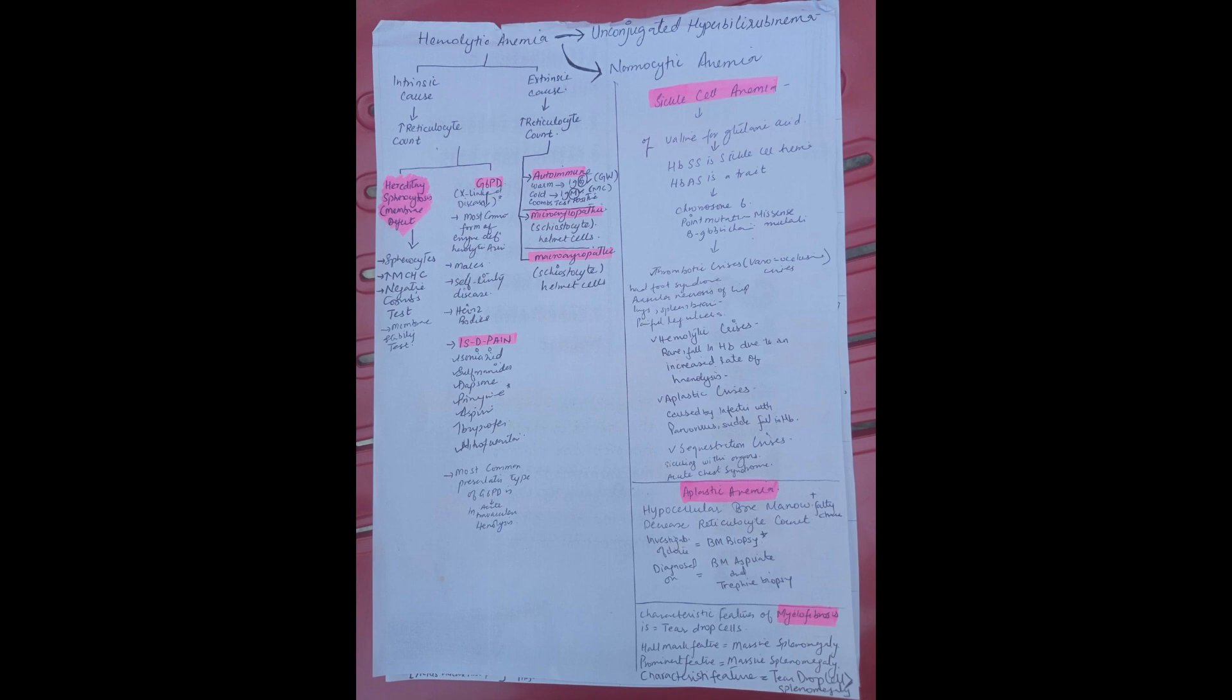The investigation of choice is bone marrow biopsy. It is diagnosed on bone marrow aspirate and trephine biopsy. Investigation of choice is bone marrow biopsy. This is important for you to remember.